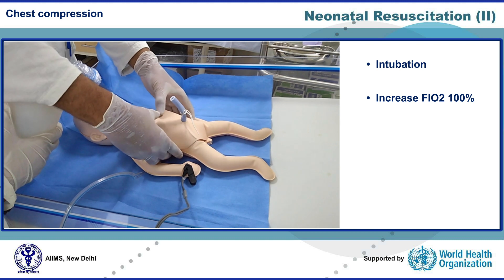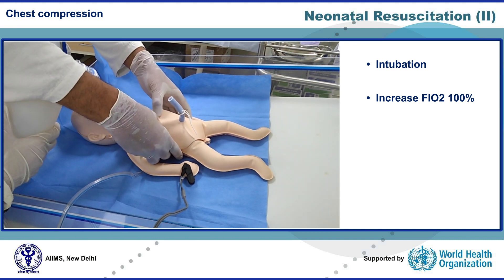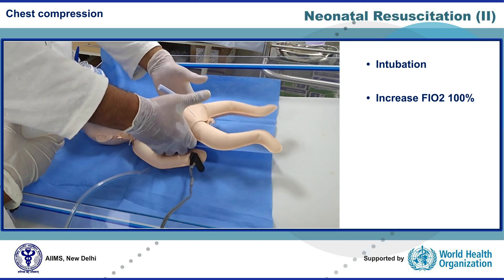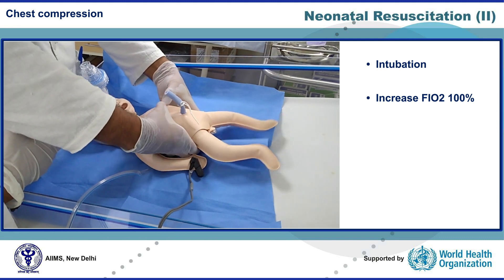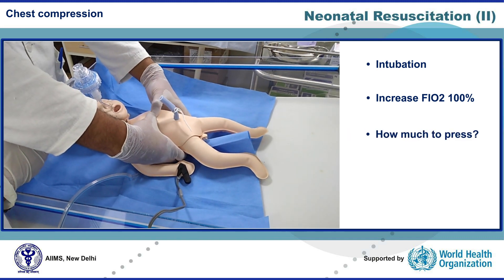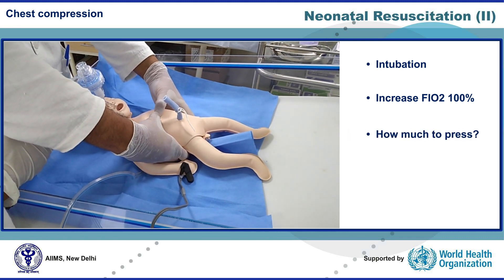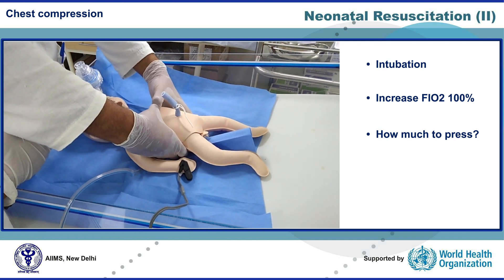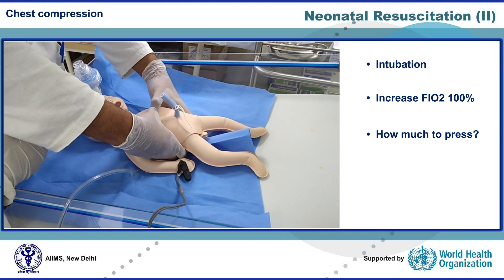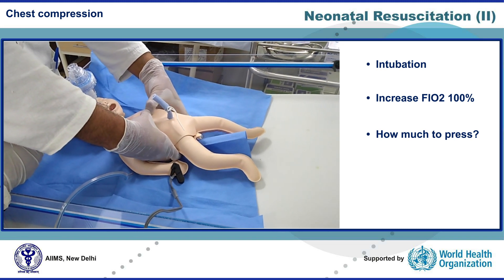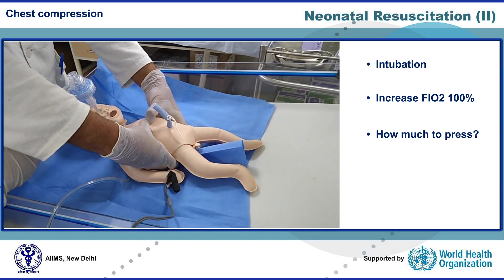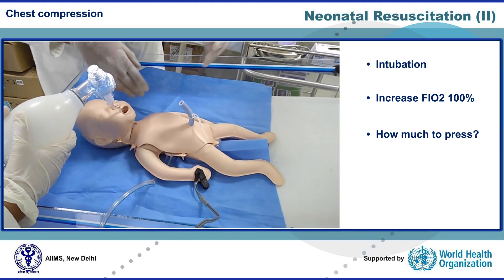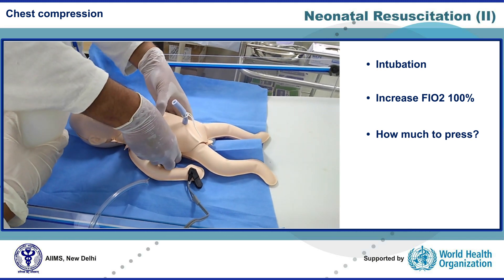The recommended technique is the two-thumbs encircling hands technique, where two thumbs perform the compression while the fingers support the back from behind. The chest should be compressed to approximately one-third of the anterior-posterior diameter, and we must allow complete chest recoil after each compression. Since the baby is already intubated, it is preferred to perform chest compressions from the head side so that the field is open for preparing umbilical venous catheterization.